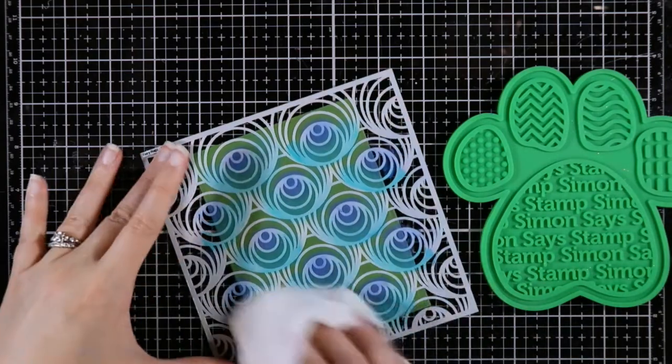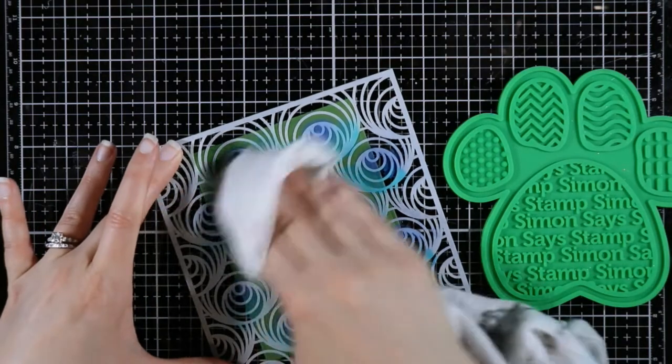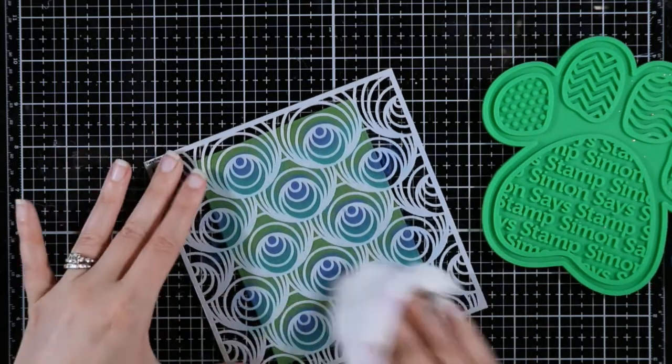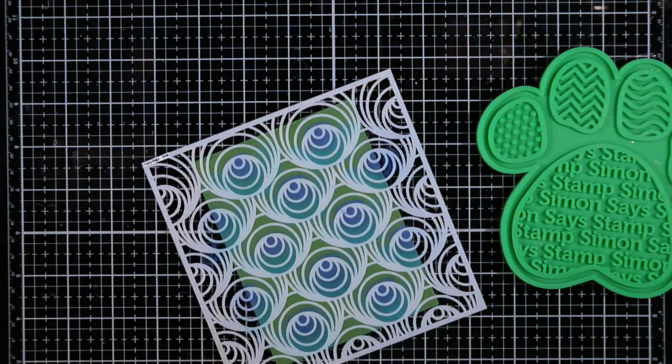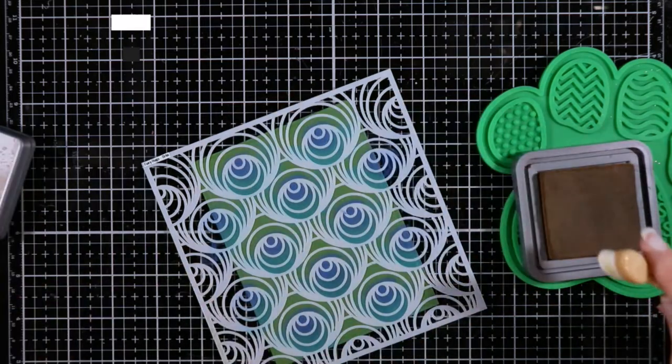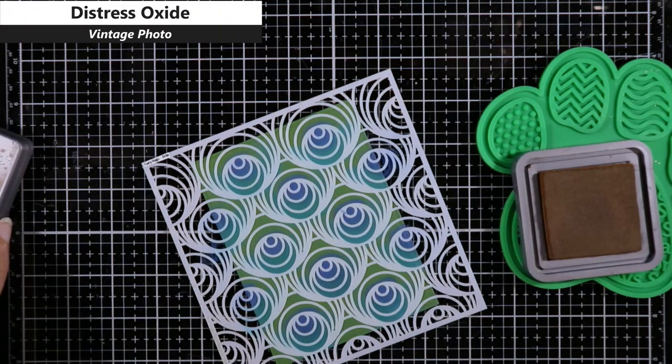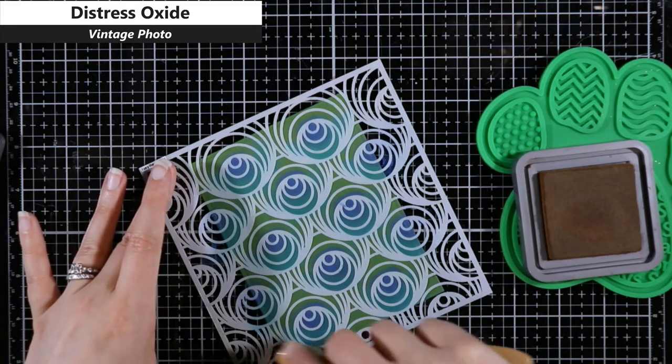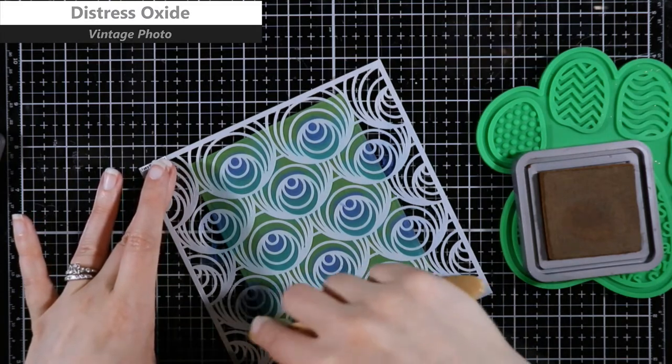We are done with the Peacock Feathers. I'm going to wipe my stencil off. The reason why I am wiping this off is so that my brush doesn't pick up a bunch of that color and I don't get my colors really muddy. Even though I do want some blending, I don't want my colors to be extremely muddy. My last color here is going to be Vintage Photo and I'm going to fill in the rest of the stencil with the Vintage Photo.